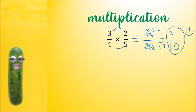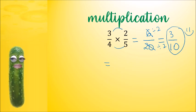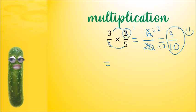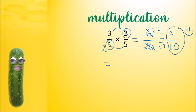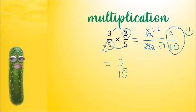Is there another way to do this that's much faster? We could have cancelled any top number with a bottom number, because what we've done is divide the top and divide the bottom by the same number. So we can do it before we work it out. We look for a number at the top with a number at the bottom that has a common factor. 2 and 4 have common factors: 2 divided by 2 is 1, and 4 divided by 2 is 2. So now we multiply 3 and 1 together to get 3, and 2 and 5 together to get 10. Cancelling before we get to the answer is much faster because there's less working out.